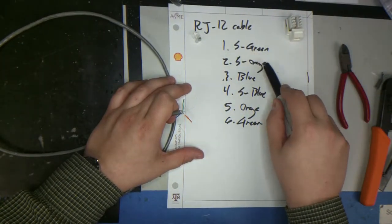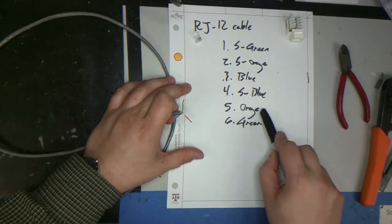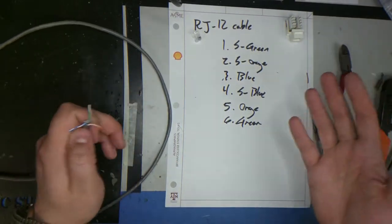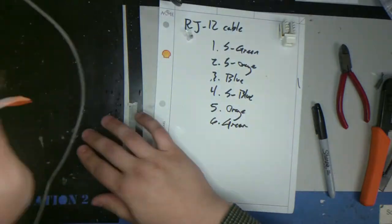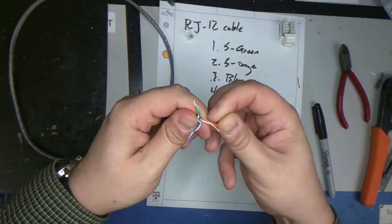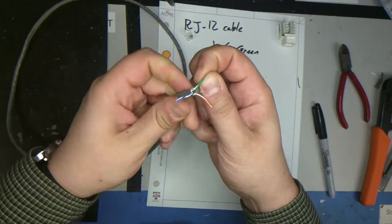Green or stripey green, stripey orange, blue, stripey blue, orange and green. We only need those so that's all we're going to leave. So the first step you want to do is kind of untwist them because they're all twisted pairs.